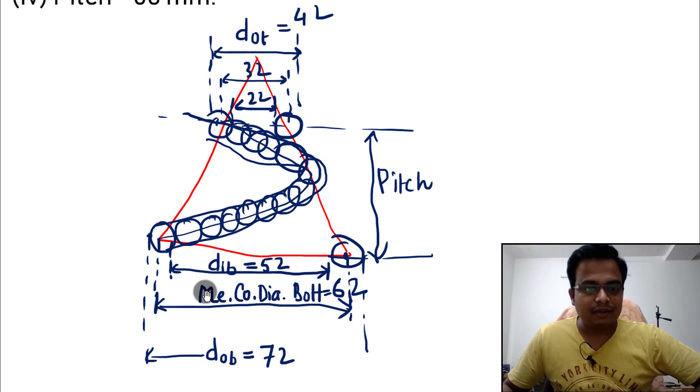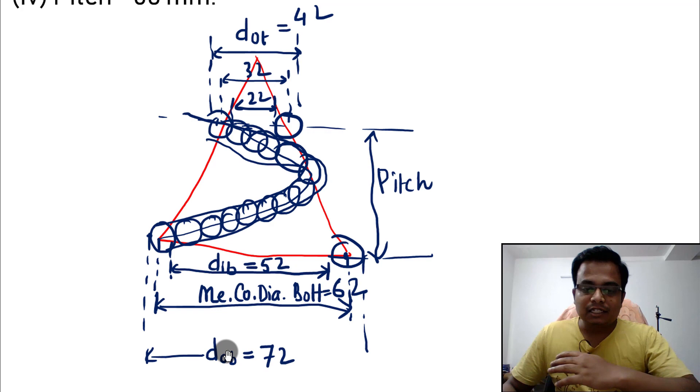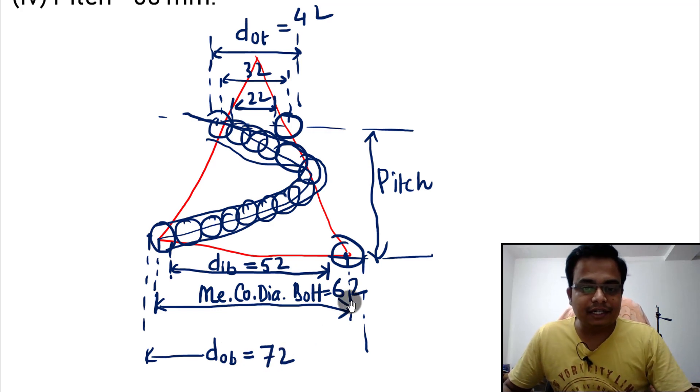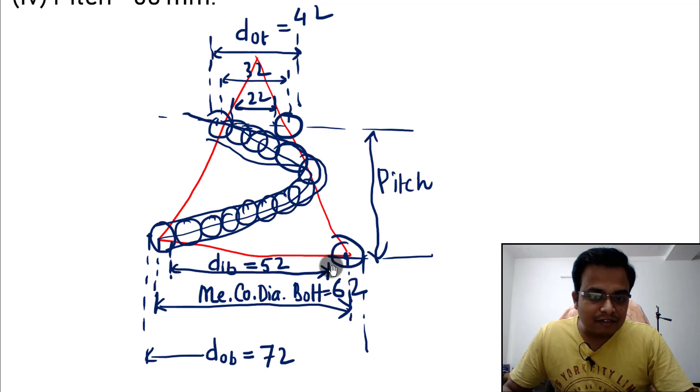So outer to outer, that is 72, which has been given already. Mean is going to be 62. So this is 5 radius, this is 5, 5 plus 5 is 10. So when you subtract 10 from 72, you'll get 62.